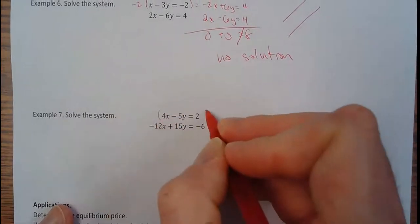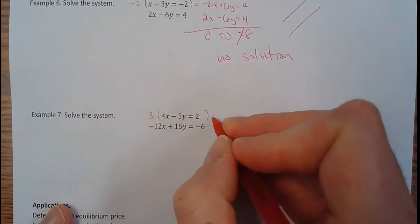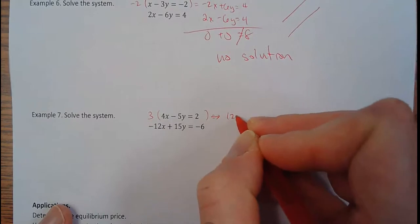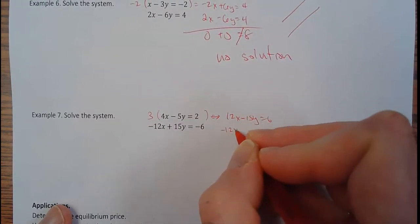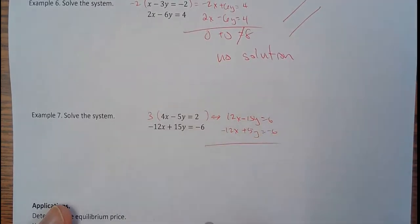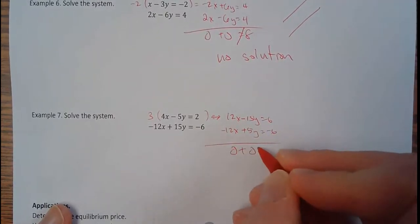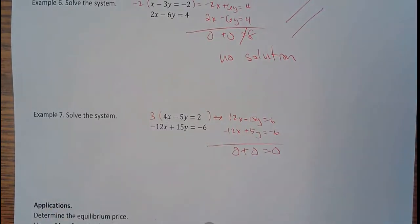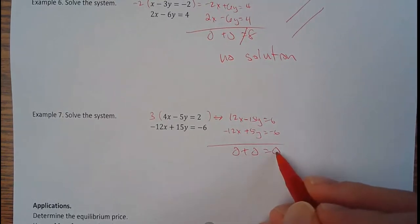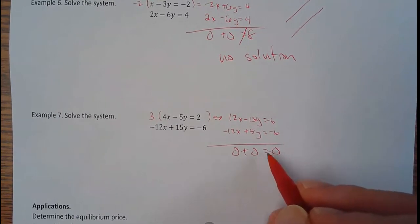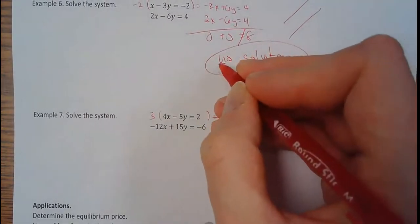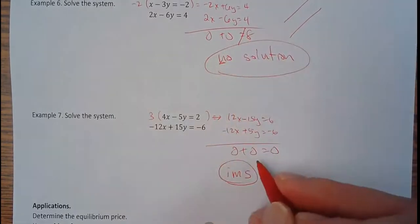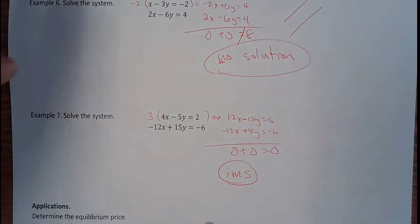This one here. Again, I'm going to use elimination. I'm going to triple the top one. So that'll be 12x minus 15y equals 6. Negative 12x plus 15y equals negative 6. If I add straight down, I get 0 plus 0 equals 0. Again, I lost my variables. So something else is going on. It's not a single point. But the thing is, this is true. 0 does equal 0. So if it is true, it's infinitely many solutions. So I say the first letter, not true, no solution is true. Infinitely many solutions. That's my weird way of remembering it.